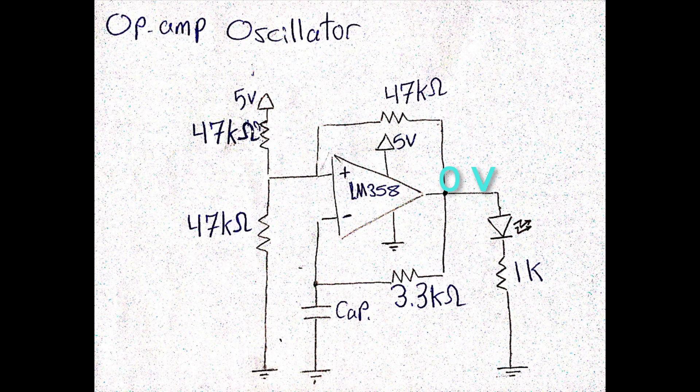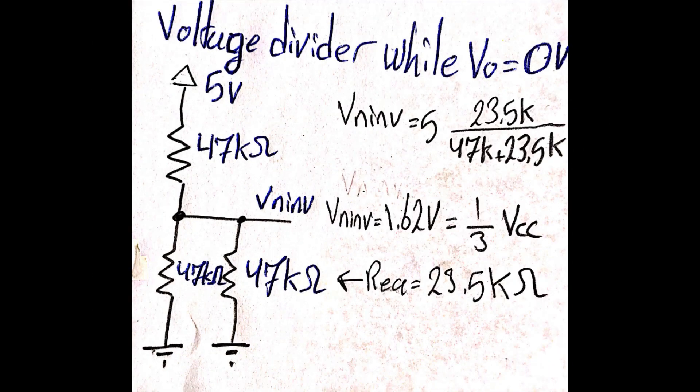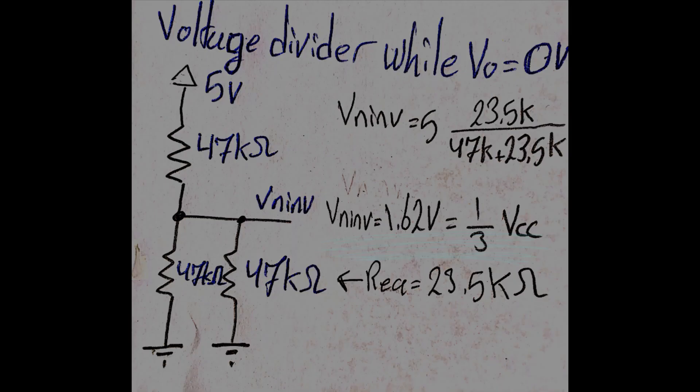Now these two resistors are connected in parallel, so the voltage divider circuit will be changed again. As you can see, the pull-down equivalent resistance has changed, which will lead the non-inverting input voltage to be changed again, to be 1.62V.